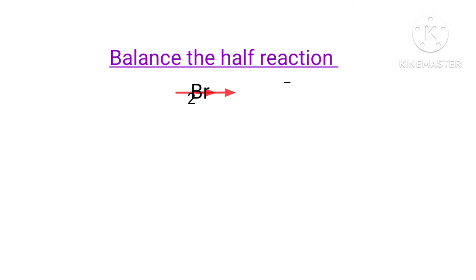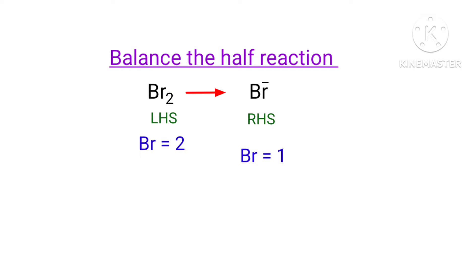Balance the half reaction. In this half reaction, the left hand side has two bromine atoms present, and the right hand side has one bromine atom present. So both sides are not equal. To make them equal, we need to put a coefficient of 2 in front of Br⁻. Now the number of atoms are balanced on both sides.